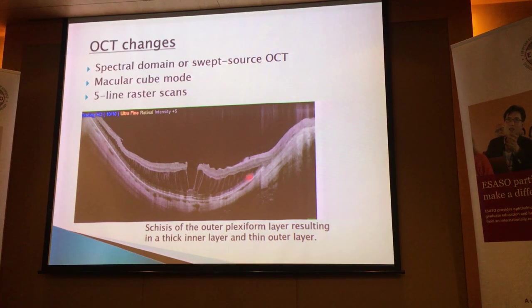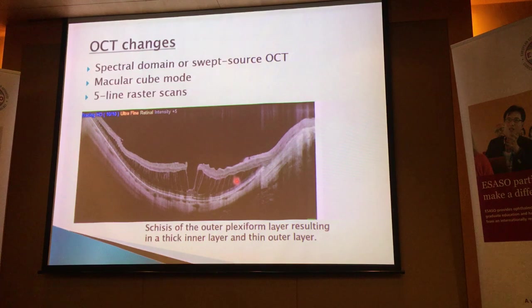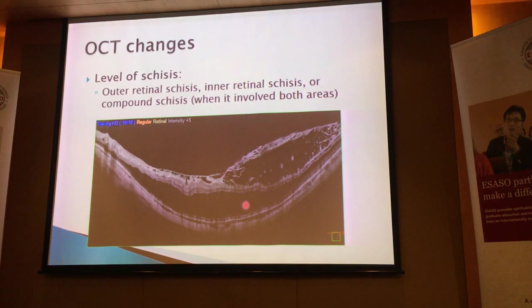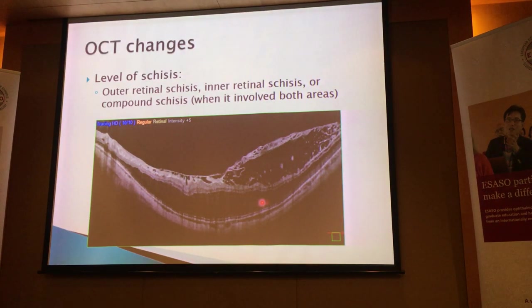You can see in this area the schisis that's typically formed in an outer foveal layer, with a thicker inner leaf and an outer leaf. What about more advanced classification of this schisis? In addition to the traditional classification, we've also found that schisis can occur in different ways. We have what we call outer retinal schisis, and we also have inner retinal schisis, which happens nearer to the internal limiting membrane. This line over here is not an epiretinal membrane — it is actually the splitting of the internal limiting membrane.